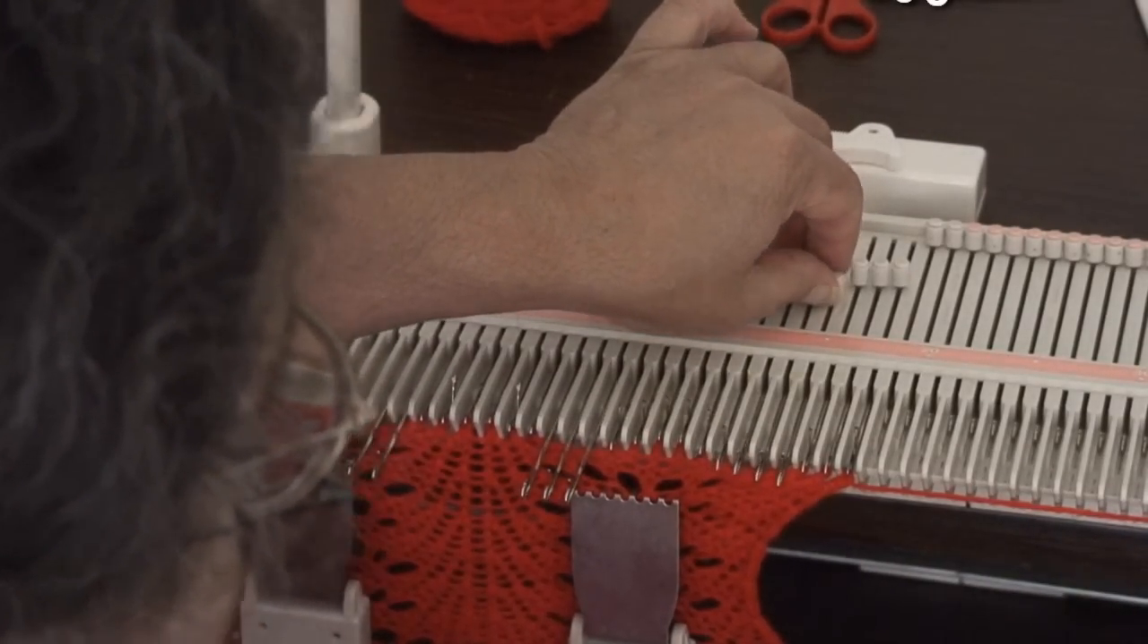So now you have your 3 empty needles that we need to transfer these stitches over so that it is like an eyelet. You get these eyelets so it's every other stitch.